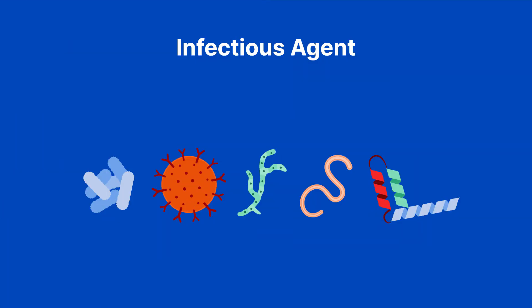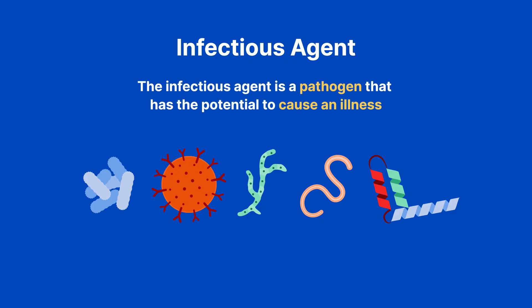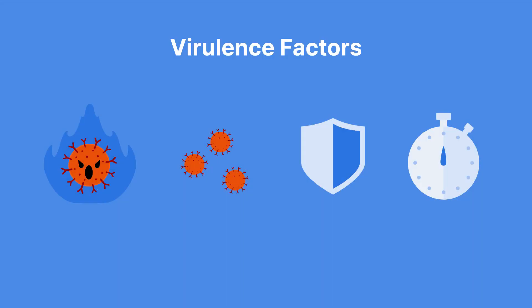The first link is the infectious agent. The infectious agent is a pathogen that has the potential to cause an illness. Pathogens can be bacteria, viruses, fungi, parasites, and prions. Not all pathogens are inherently bad, but there are some factors that determine whether or not a pathogen can actually produce disease.